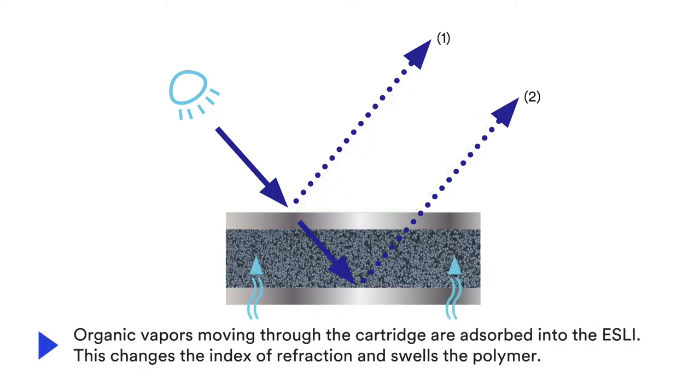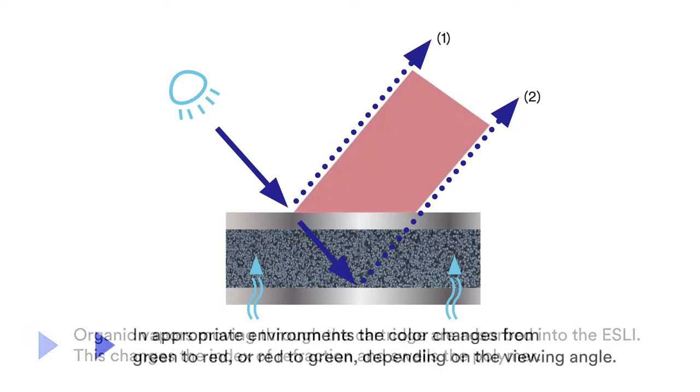Organic vapors moving through the cartridge are adsorbed into the ESLI. This changes the index of refraction and swells the polymer. In appropriate environments where the concentrations of specific organic vapors are above certain levels, the color changes from green to red or red to green, depending on the viewing angle.